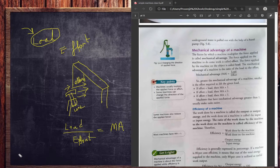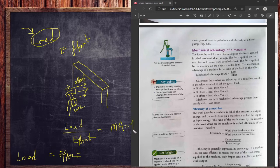So for an ideal machine, load must be equal to effort. And for that case, as you can see, if load is equal to effort, then both will get cancelled and mechanical advantage will be one. If load is greater than effort, then you can see the mechanical advantage will also be greater than one.